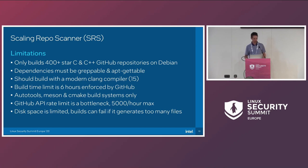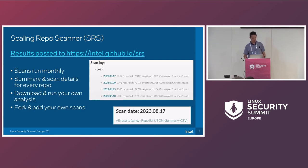GitHub API rate limit is a bottleneck — GitHub limits 5,000 requests per hour per token, which we can hit with the Scorecard quite easily. Disk space is also an issue if a project generates a lot of files. It runs monthly, and out of around 4,000 repositories that meet our criteria, we can automatically build 2,000. Just by grepping for apt-get and installing everything that follows, being able to automatically build half of C and C++ repositories was impressive — I wasn't expecting that.